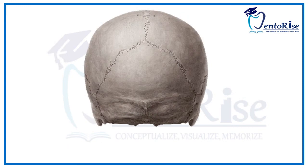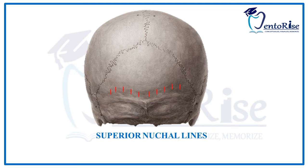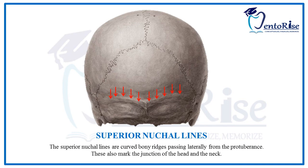The next feature in Norma Occipitalis is the presence of nuchal lines. Nuchal lines are basically curved bony ridges passing laterally from the external occipital protuberance. There are three pairs of nuchal lines present in a human skull: the superior nuchal lines, the inferior nuchal lines, and the highest nuchal lines. However, the highest nuchal lines are not always present. The superior nuchal lines are marked in the figure with red arrows and also mark the junction of the head and the neck.